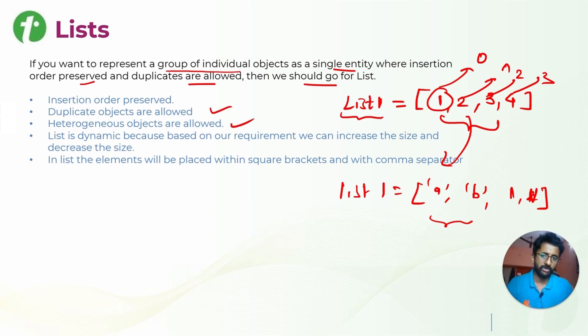List is dynamic because based on our requirement we can increase the size or decrease the size. There are different methods to add or remove elements from the list. We will see them one by one. We have seen lots of methods in strings; similarly, there are methods in lists as well. In list, elements will be placed within square brackets and comma-separated.